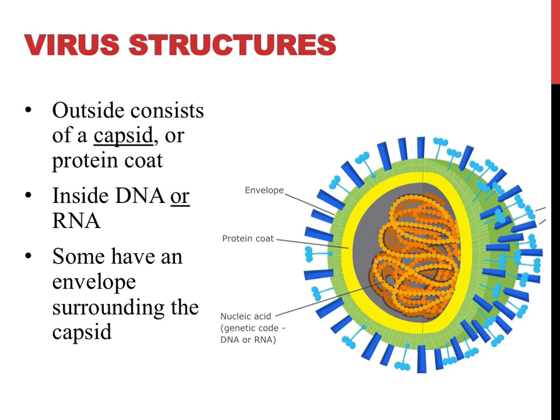Some viruses possess another coat outside of their capsid that's referred to as an envelope. An envelope is basically a cell membrane that just viruses possess. This membrane allows a virus to move into a cell very easily, just as endocytosis typically occurs in cells to bring in new materials.